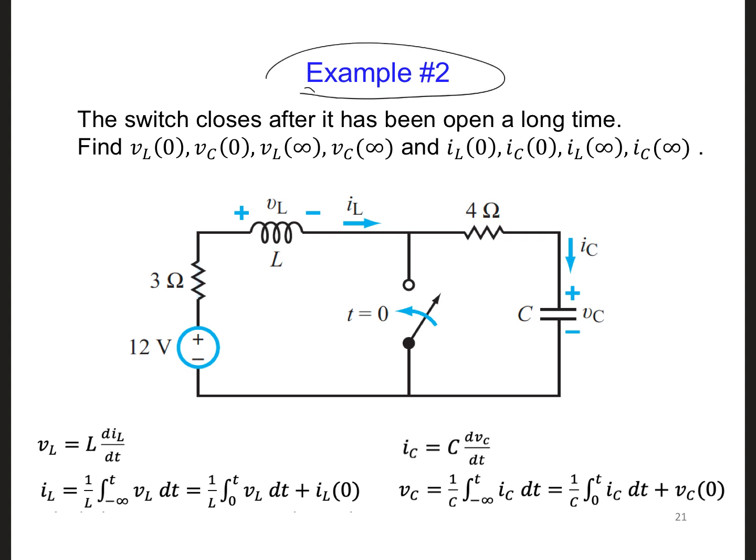And here's the second example. I think this is our last example. But there's quite a bit that we want to find here. We want to know the voltage for the inductor and the capacitor at time. This is time. Time equals 0.